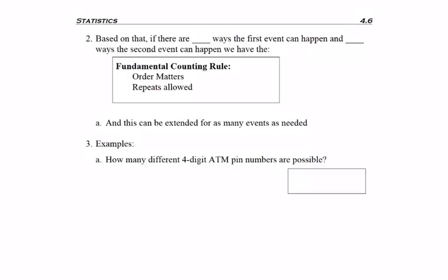So now thinking back to what we just said about trees and the multiplication method, if there are m ways that a first event can happen and n ways that a second event can happen, we have something called the fundamental counting rule. When order matters and repeats are allowed, to find the number of ways that the total process can happen is multiplication—just multiply m times n.